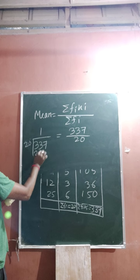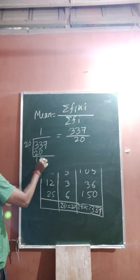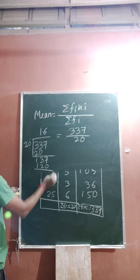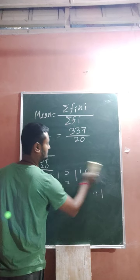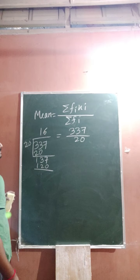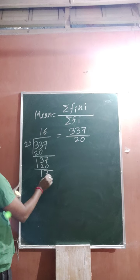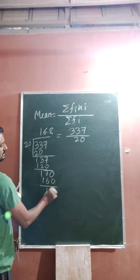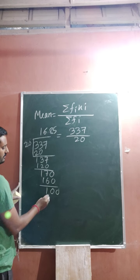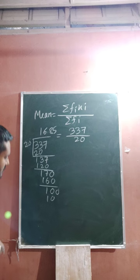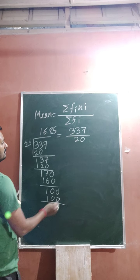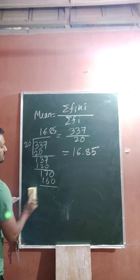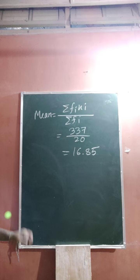That means 337 divided by 20. Dividing 337 by 20 gives 16.85. So the required mean is 16.85.